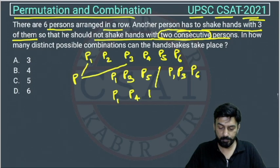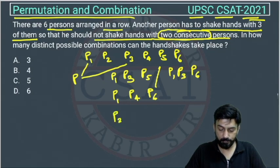He cannot shake hands. What is the other possibility? The other possibility is shaking hands with P2, then he cannot shake hands with P3. Then he will shake hands with P4.